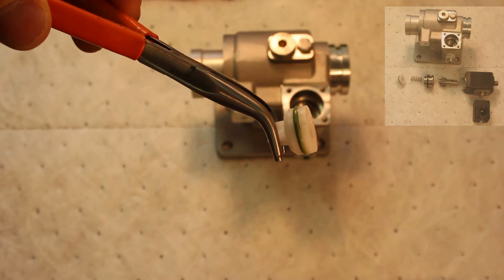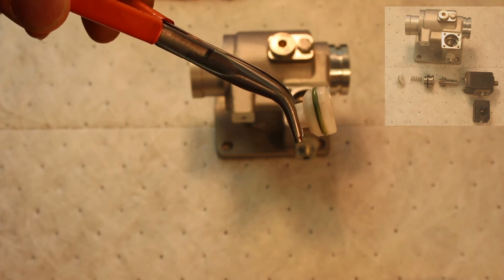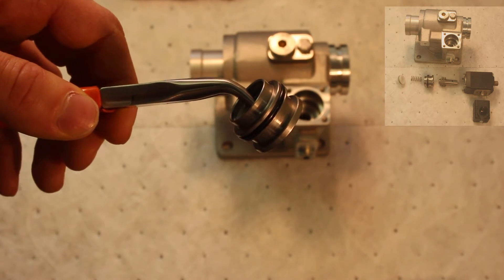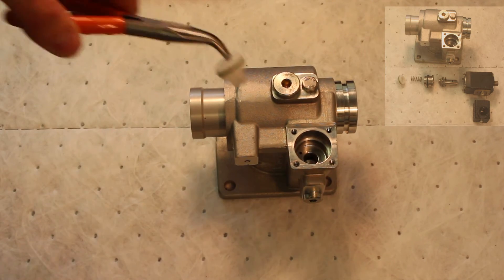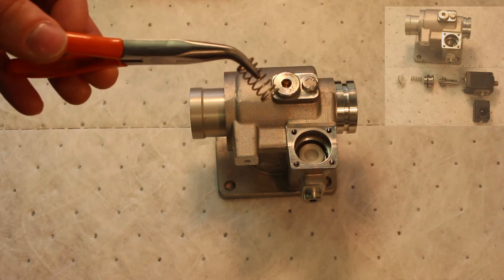Before installing the new spring and poppet, lubricate the o-ring on the poppet with grease such as white lithium or valvoline crimson. Do not use excessive amounts of grease as this may impede the operation of the solenoid poppet valve. Remove any excess grease from the top and the bottom of the solenoid poppet.